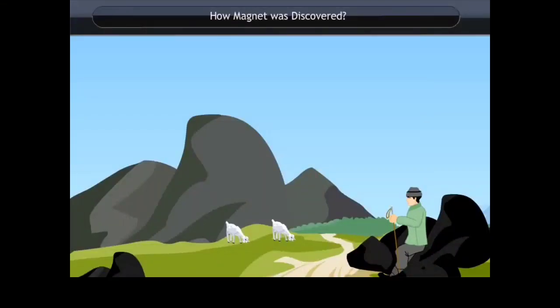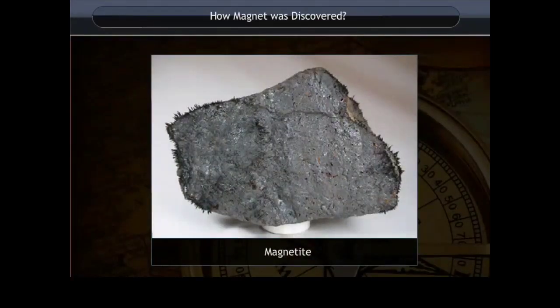How magnet was discovered: A shepherd named Magnus who lived in Greece discovered magnets when he was sitting on a rock. He found that the rock on which he was sitting was attracting his iron-based stick and shoes. After sitting on some other rocks, he found that one rock was different from others.